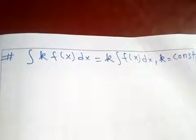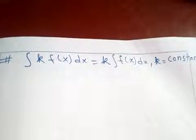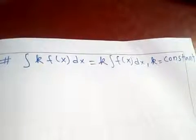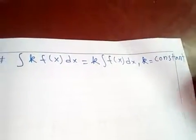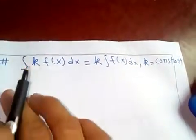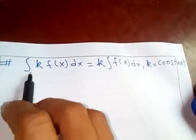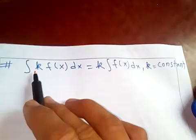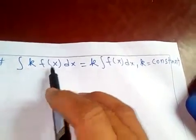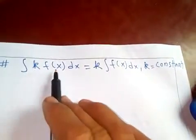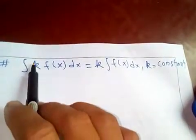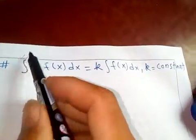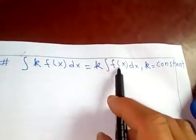Thanks for watching my video. Today I'm going to discuss an important property of indefinite integrals. The indefinite integral of k times f(x)dx, where k is a constant, equals k times the integral of f(x)dx, since the constant k comes out outside the integral. We are going to prove this.